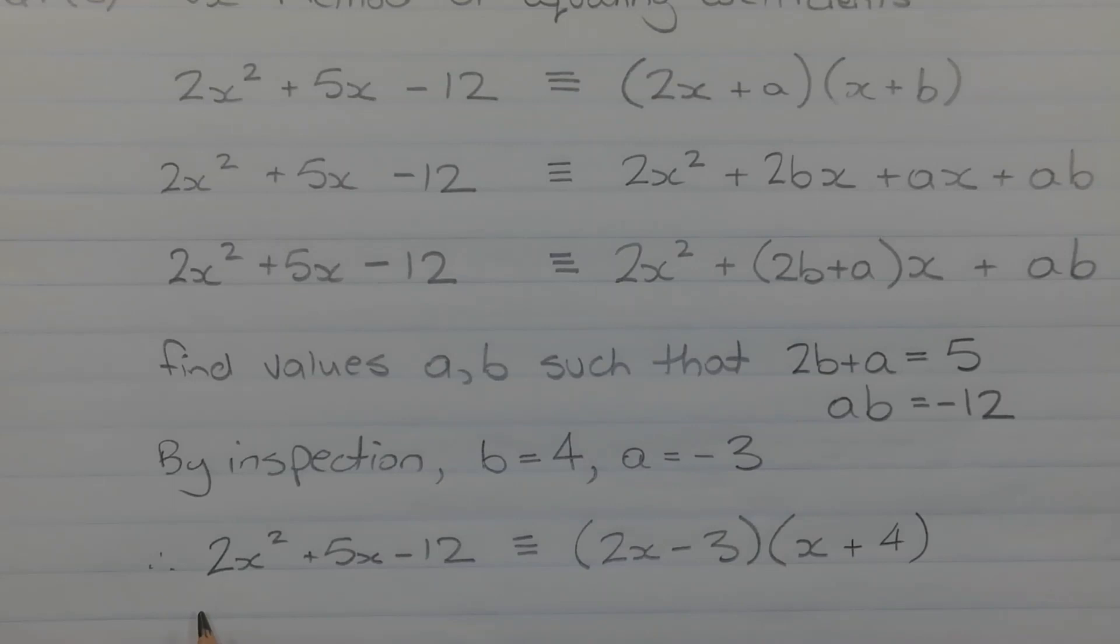Therefore, 2x squared plus 5x minus 12 is identical to 2x minus 3 in brackets times x plus 4 in brackets.